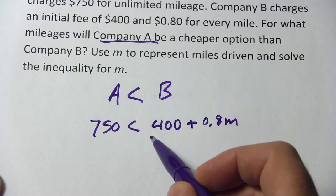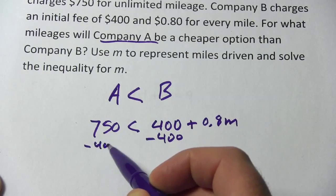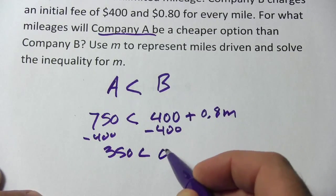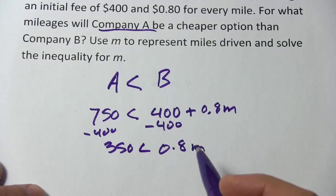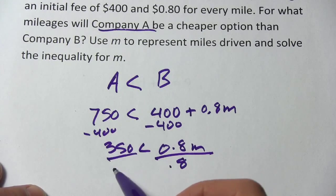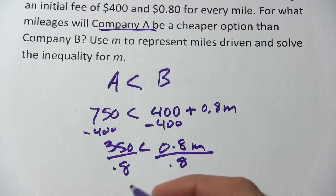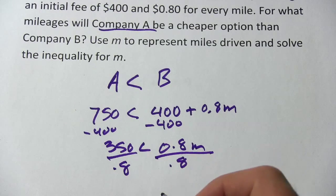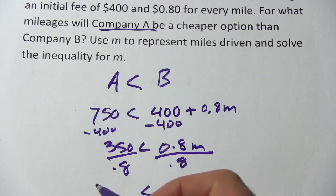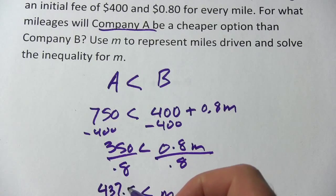Now to solve this, we're going to subtract 400 from both sides, so we get 350 is less than 0.8M. And then we're going to divide by 0.8 — let me use my calculator here. What I'm getting is M is greater than 437.5.